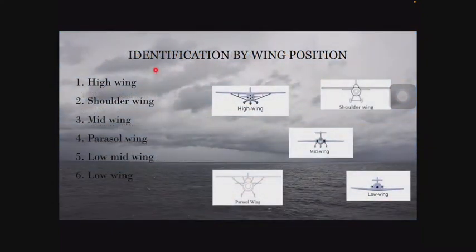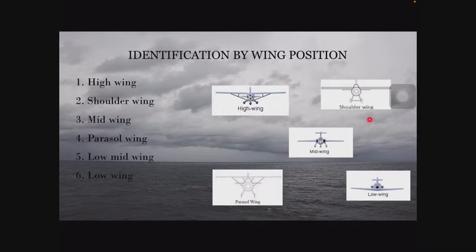First comes identification of aircraft by position of the wings and where they are placed. There are six main methods to do this and here are the images for each. As you can see here, this is the image for the high wing type. Here is the example for the shoulder wing, mid wing. This is the parasol wing, and this is the low wing.